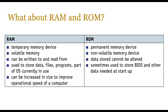Now let's look at RAM and ROM — this is a refresher from IGCSE, so there should be nothing surprising. RAM is temporary, volatile, can be written to and read from, used to store data files and the part of the operating system currently in use, and can be increased in size to improve operational speed. ROM, on the other hand, is permanent, non-volatile, and cannot be altered in most cases. It can be altered for PROM and EEPROM variants, but standard ROM is read-only. ROM is used to store the BIOS and other data needed at startup.